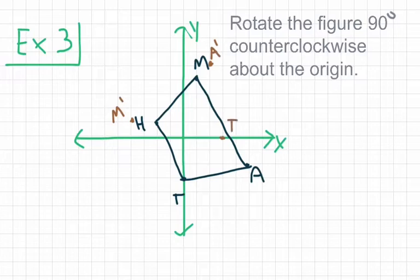So one more point to go for point H. Point H originally starts off at negative 2, 1. And when we rotate 90 degrees counterclockwise, we end up at negative 1, negative 2. So again, labeling it H prime.